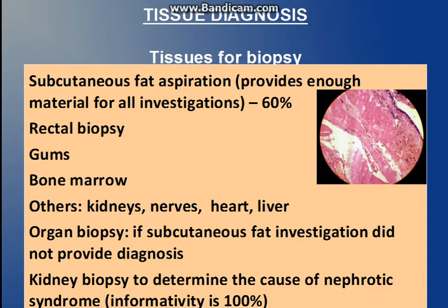Now going to which tissues will be used for biopsy. The first and most commonly used is subcutaneous fat aspiration — it is very easy to obtain and provides enough material for all investigations. We can also use rectal biopsy, gums, and bone marrow aspiration. Other tissues are very rarely used and are used in autopsies to confirm the diagnosis.